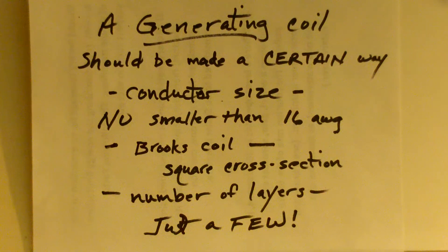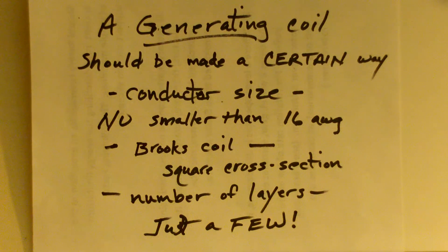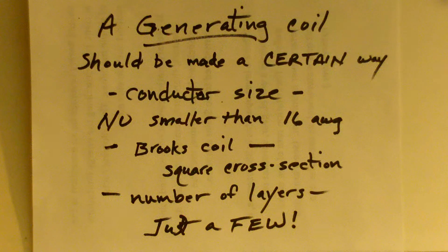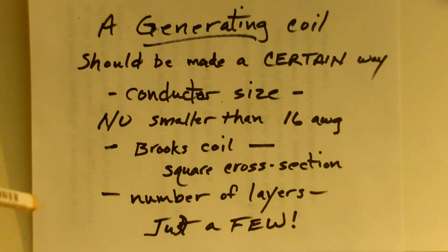So, most people don't understand that a generating coil has to be made a certain way with a certain size conductor and a certain cross-section with the resultant limited number of layers. There's only going to be five or six layers in such a coil.